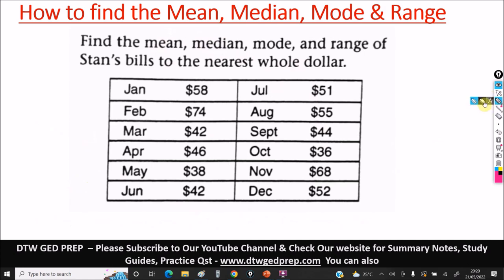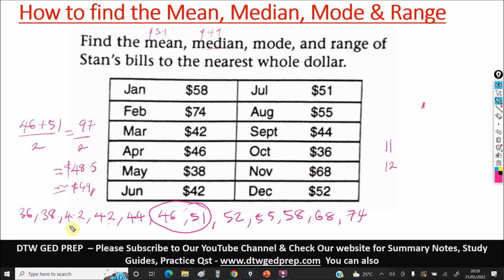Now let's find the mode. The mode is the most frequently occurring number. From our data set, we can see the highest occurring number is $42 — it appeared twice while all other numbers appeared just once. So the answer for the mode is $42. We don't need to approximate that.